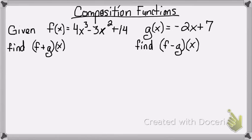What that simply means is that I'm going to add both functions together. So all I'm going to do is combine my like terms. The first function is 4x cubed minus 3x squared plus 14, and I'm adding negative 2x plus 7.